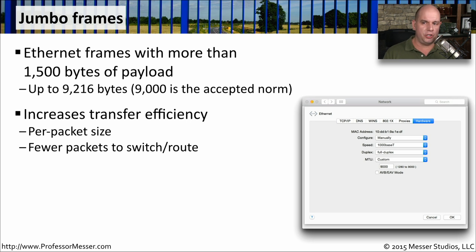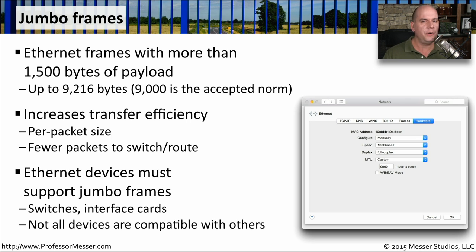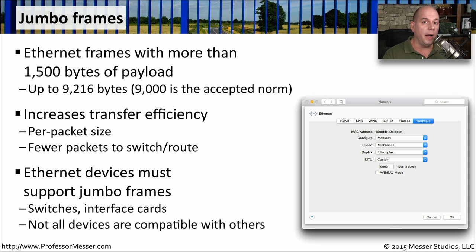Whenever you're configuring jumbo frame support, all of your network devices between those two points have to also support jumbo frames. If you're going through a switch that doesn't understand jumbo frames, those frames will not be passed through at all. So you want to be sure that your operating systems, your storage area network, and all the switches and routers in between are all configured to support these jumbo frames.